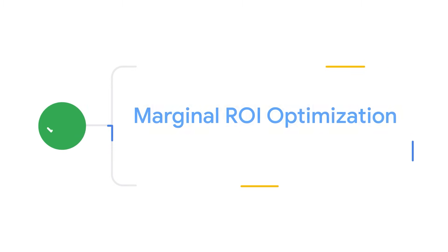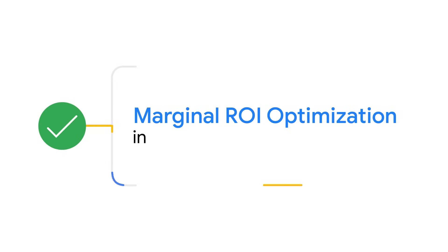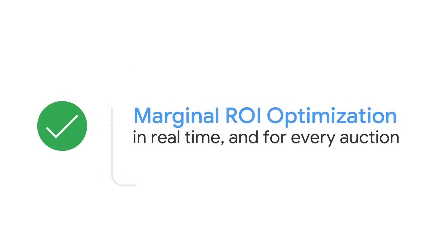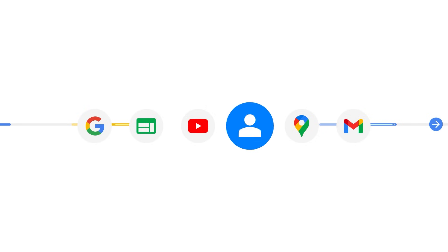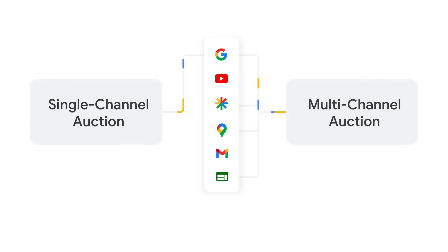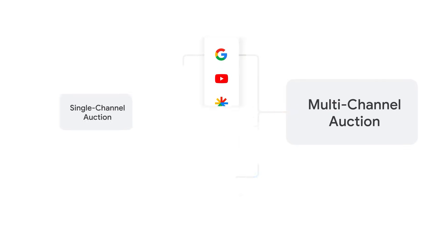This is called marginal ROI optimization. It happens in real time and for each and every auction. This lets you find the next best conversion across all channels and meet your customers wherever they are, no matter how unpredictable their purchase journeys might be. To help you understand this, we'll walk you through a quick illustrative example.